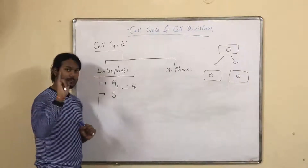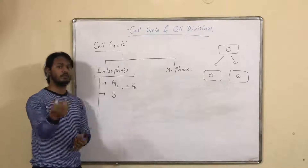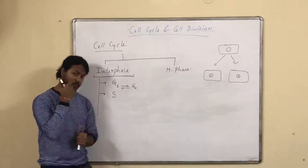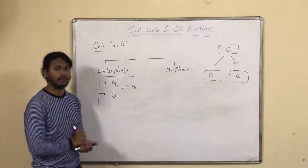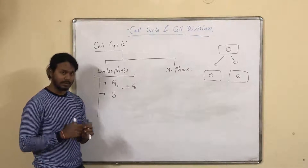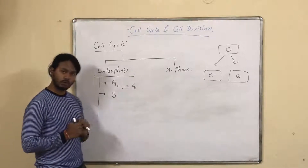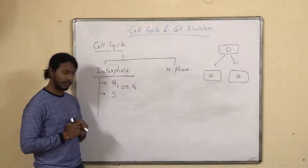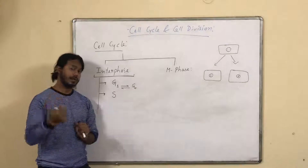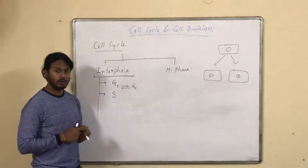Next, there is also unique protein synthesis in the S phase — histone protein synthesis. Histone protein is a DNA-binding protein. It is associated with chromosome or chromatin formation.